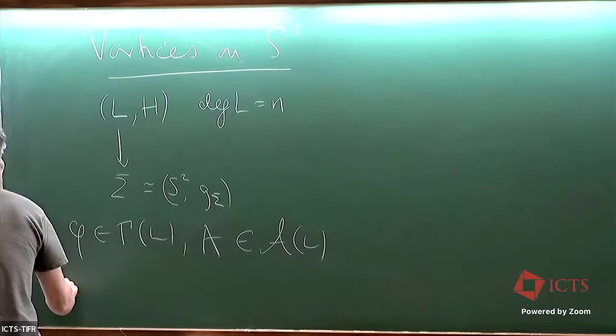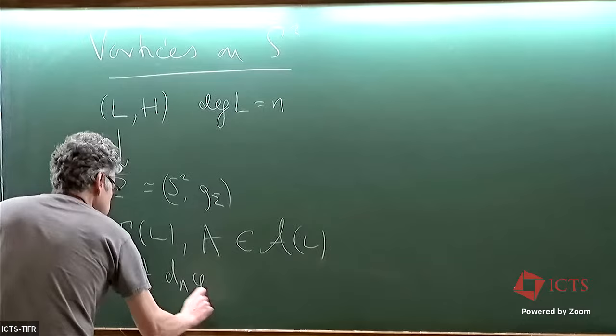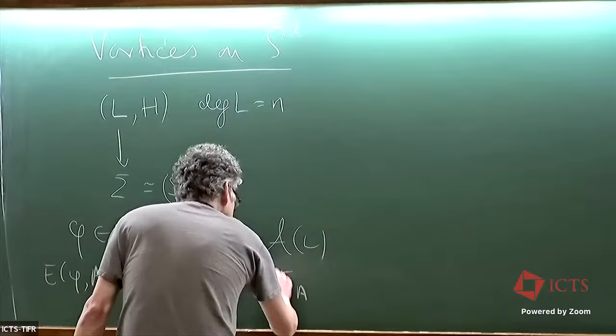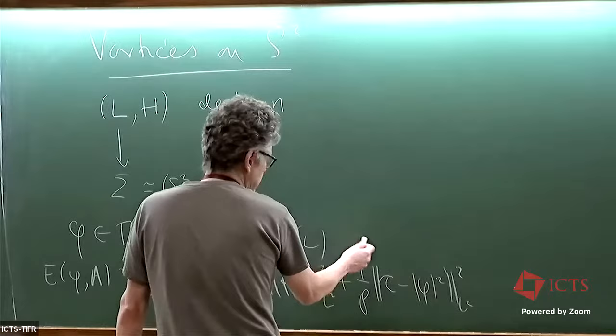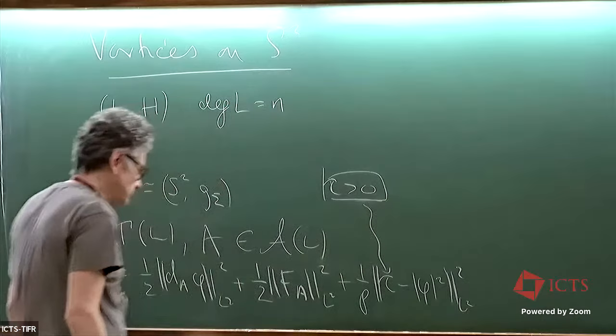To any such pair we associate a natural energy functional — the Yang-Mills-Higgs energy — with a real parameter tau greater than zero. The point is that we have this Bogomolny argument, which says that the energy is bounded below by pi times tau times N.